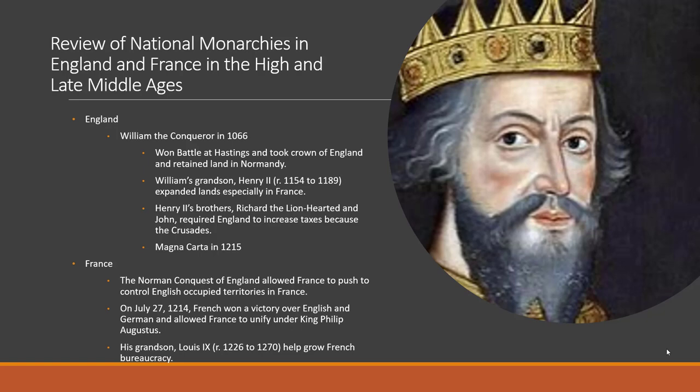Philip Augustus's victory in 1214 occurred while King John was in power in England—one reason John was unpopular was that French lands were lost that year. Philip Augustus set up a dynasty, and his grandson Louis IX ruled France from 1226 to 1270, developing and growing French bureaucracy to manage and expand the French kingdom.